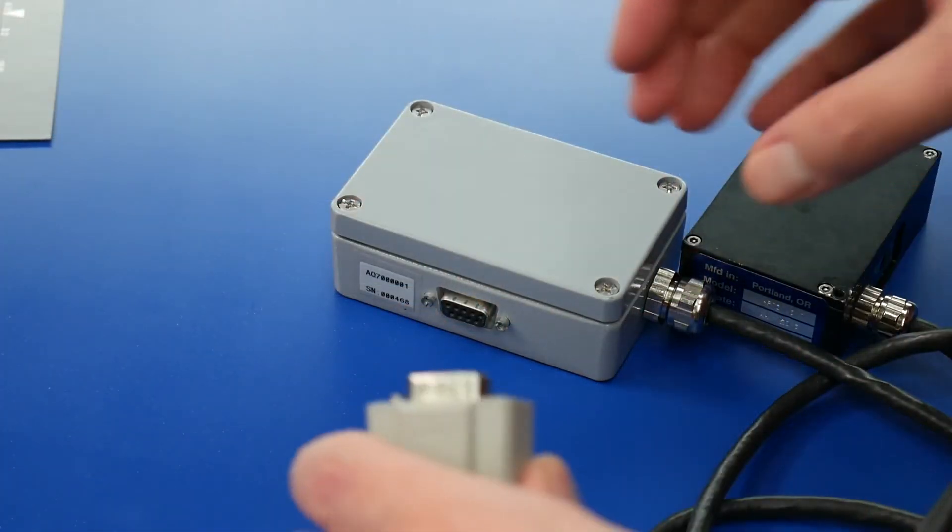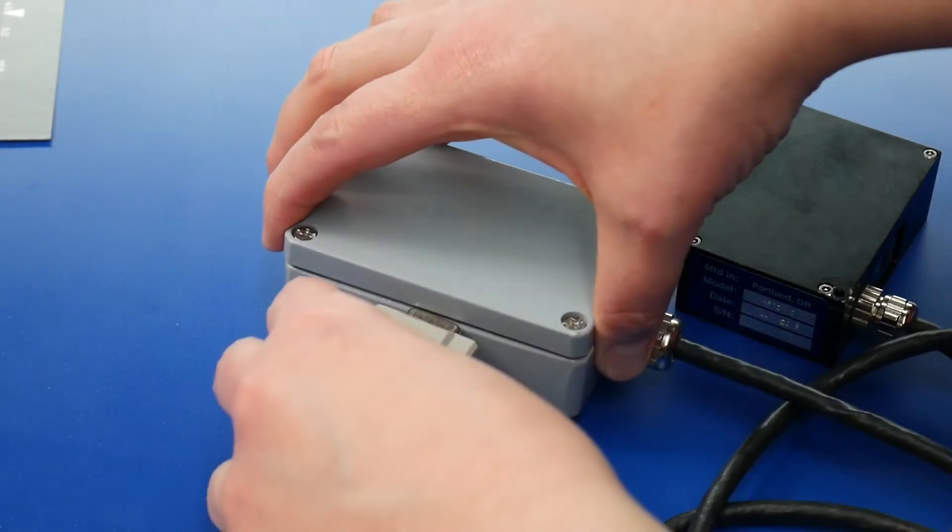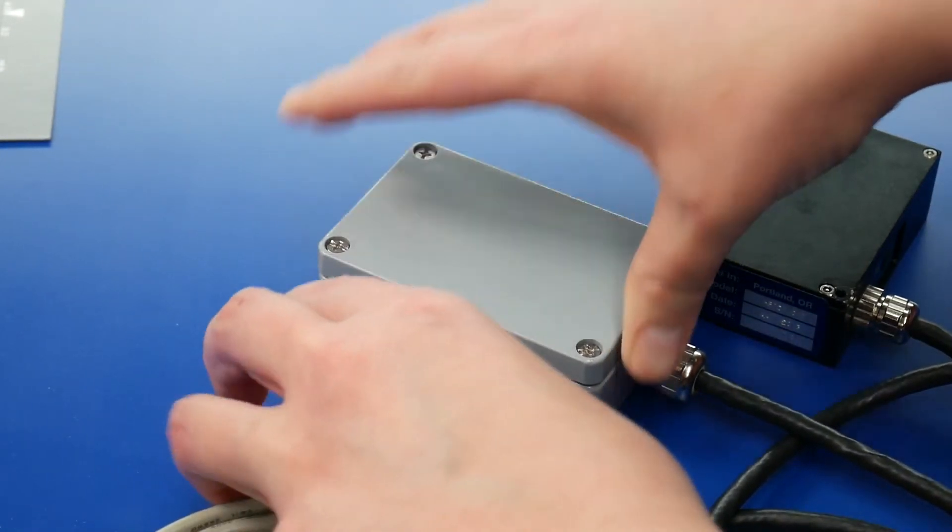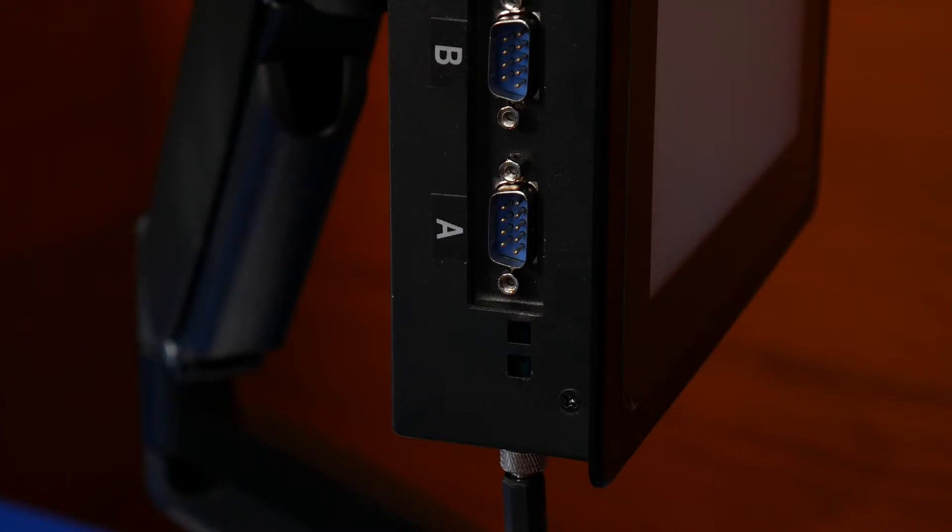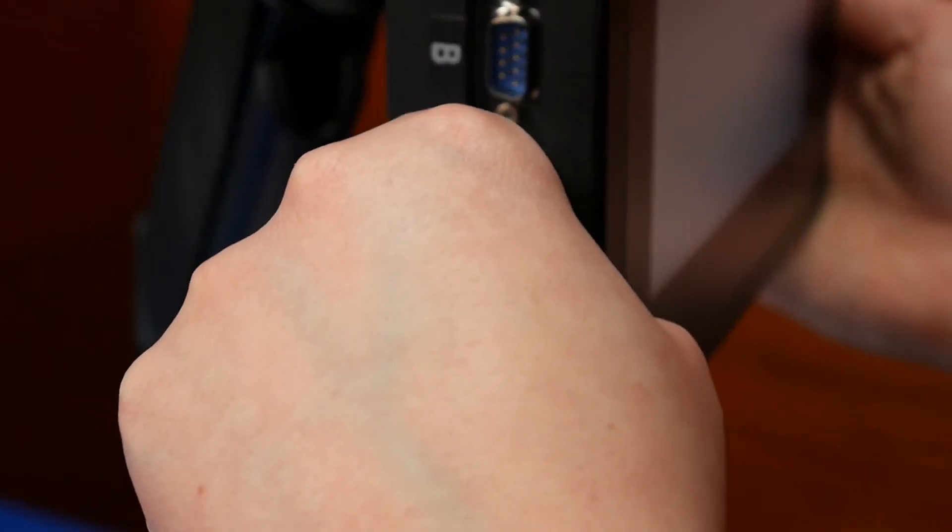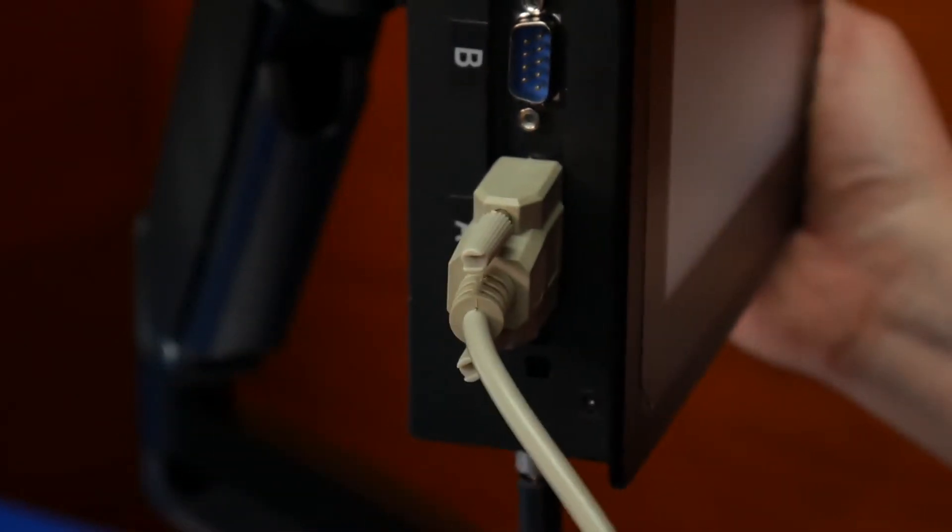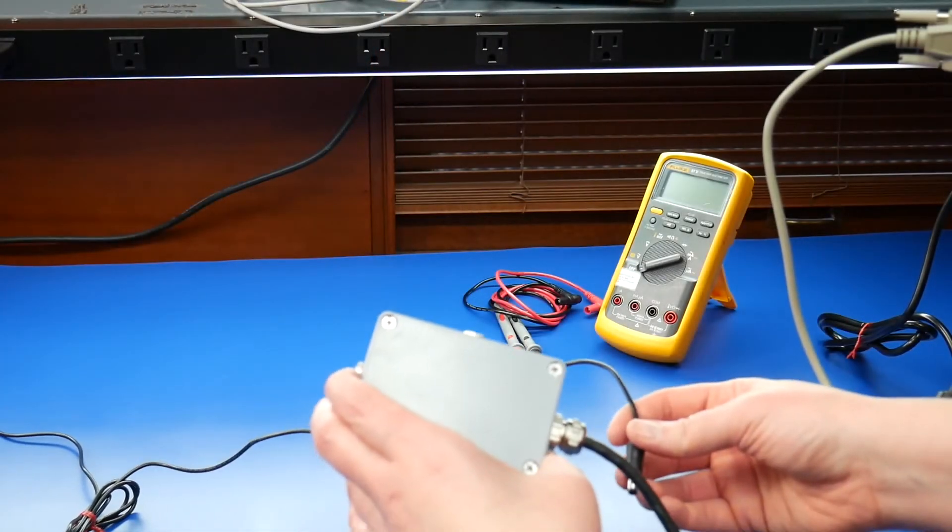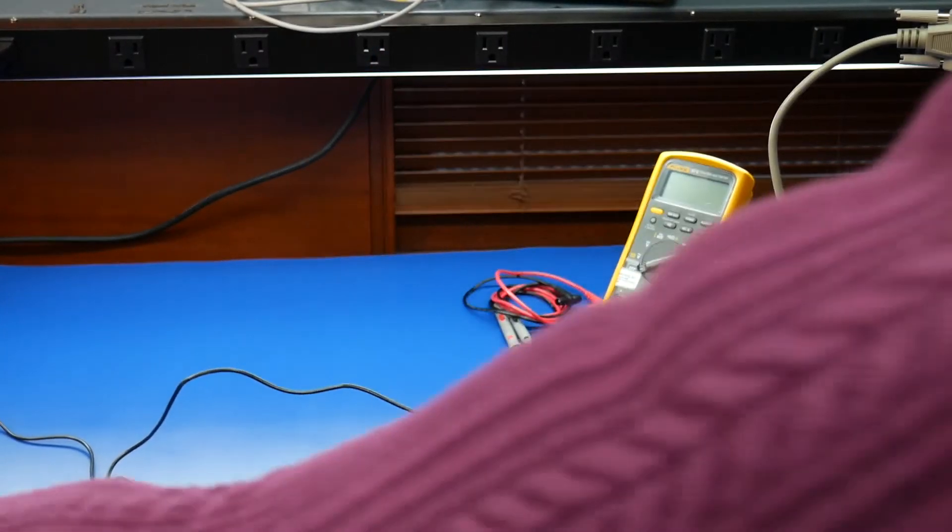First connect a 9-pin cable to the sensor and then to a serial port on the touch panel. We'll use port A in this example. Then connect the sensor to a power supply.